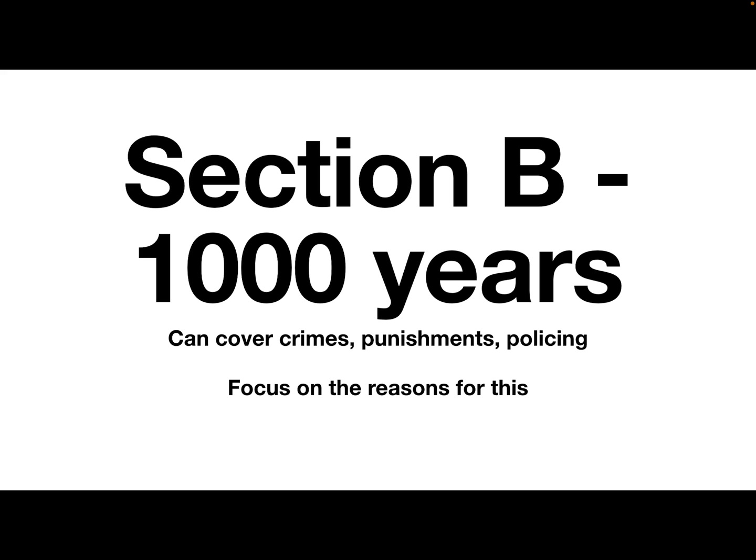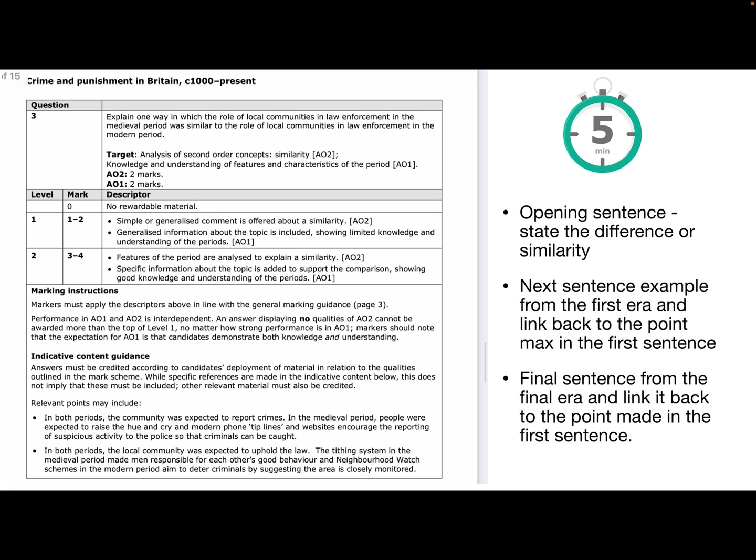So section B then, the thousand years. So this can cover crimes, punishments and policing and focus on the reasons for this. So it talked to you about the nature of, which means the type of something, perhaps in that 12 mark question that's done over the last couple of years. And remember again, it's unlikely that this is just going to be on policing at this point. So the first one, the four mark question, explain one way in which the role of local communities in law enforcement in the medieval period was similar to the role of local communities in law enforcement in the modern period. You are not going to get marks if you talk about differences.